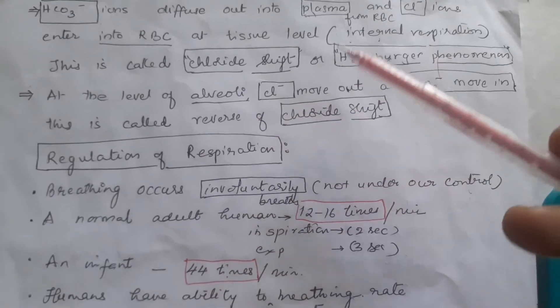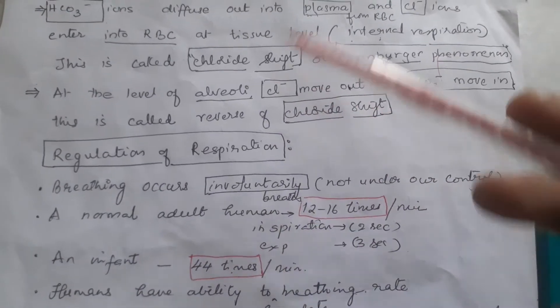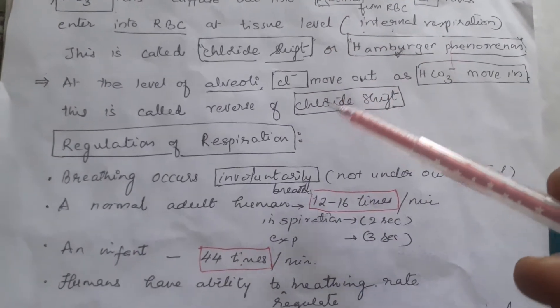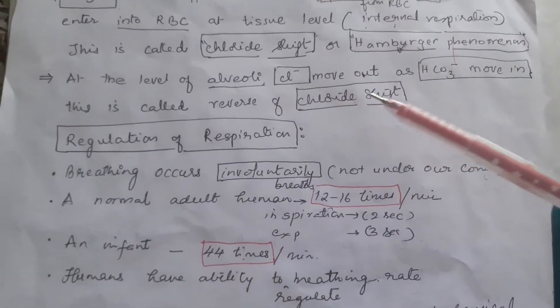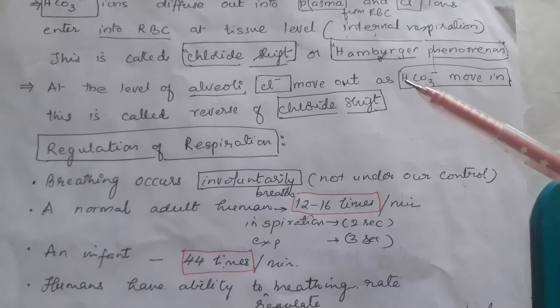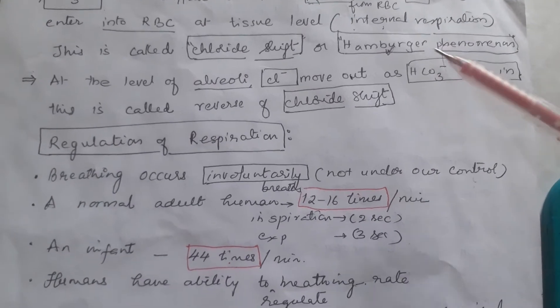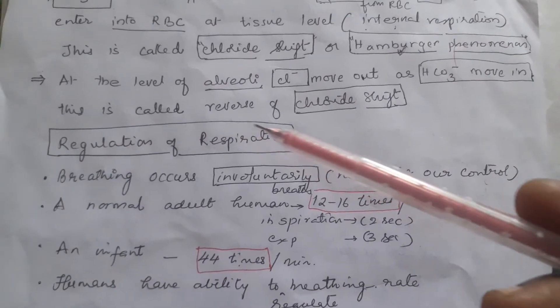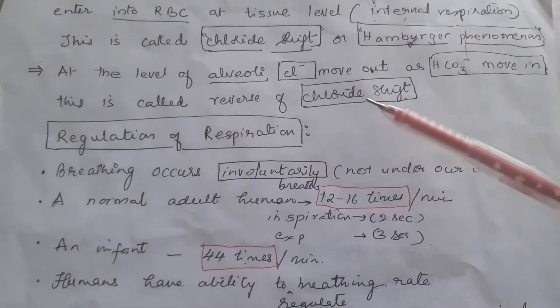At the level of alveoli, chloride ions again move out into the plasma and bicarbonate ions move in. This is called the reverse of chloride shift.